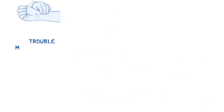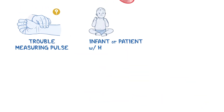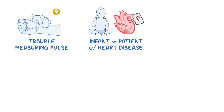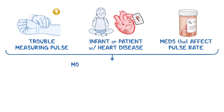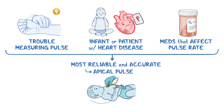If you're having trouble measuring the pulse, caring for an infant, or caring for a patient with heart disease or who takes medications affecting pulse rate, the most reliable and accurate method is to obtain an apical pulse. This is the pulse measured right over the heart using a stethoscope at a location called the point of maximal impulse, or PMI.